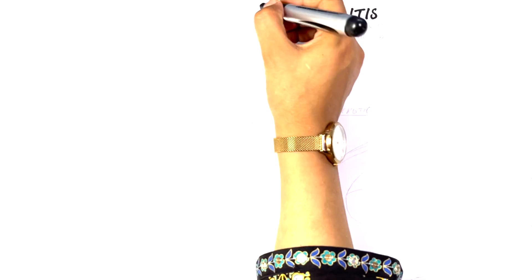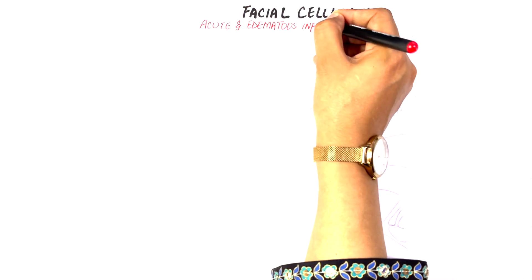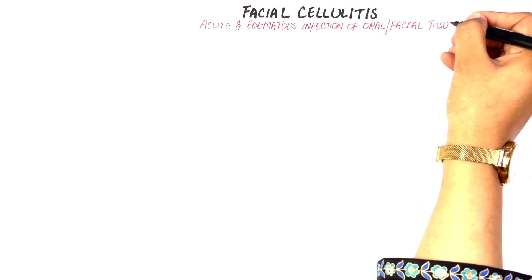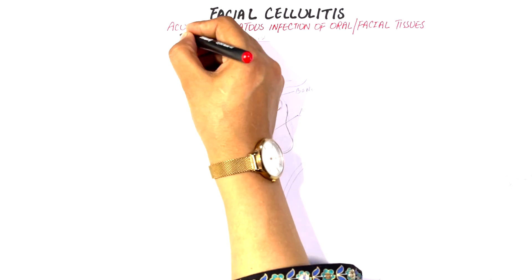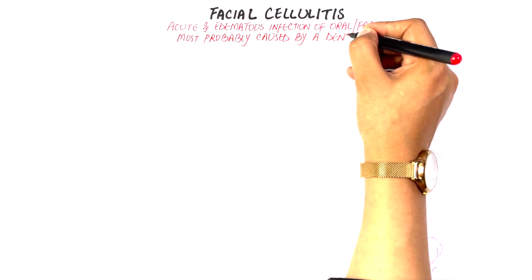Cellulitis can be defined as bacterial infection of the bone and its surrounding periosteum and soft tissues that can occur anywhere in the body. The focus of this video will be facial cellulitis originating from dental infections. Facial cellulitis is an acute and edematous infection of the oral or facial tissues most probably caused by a dental infection.